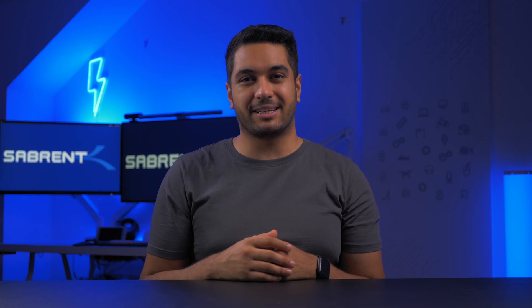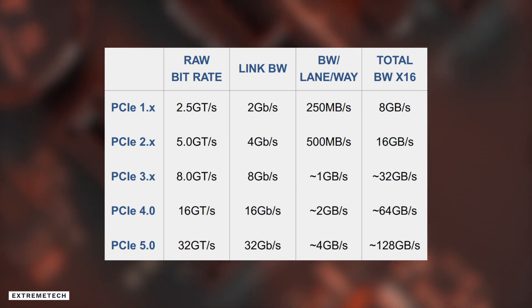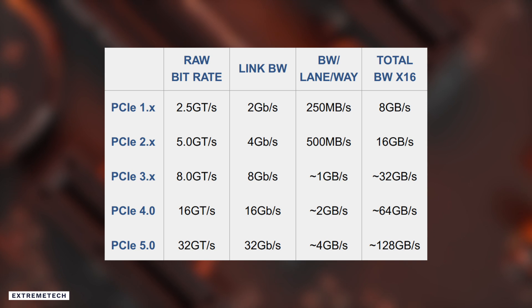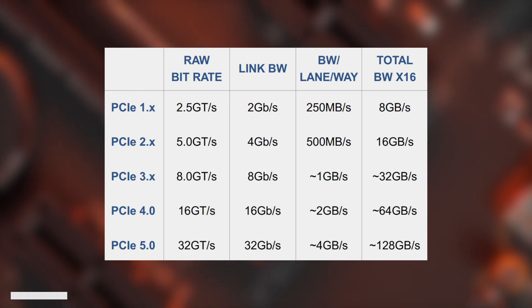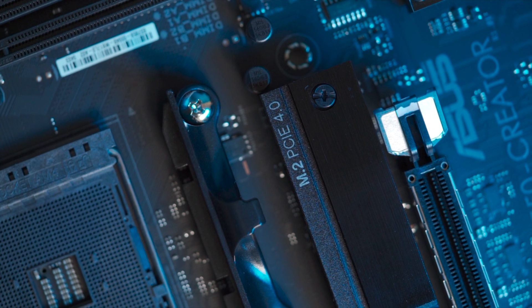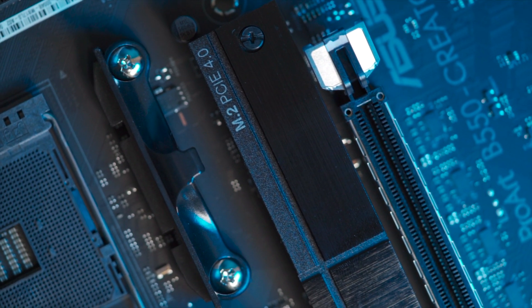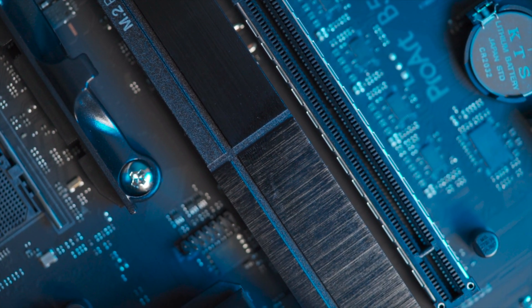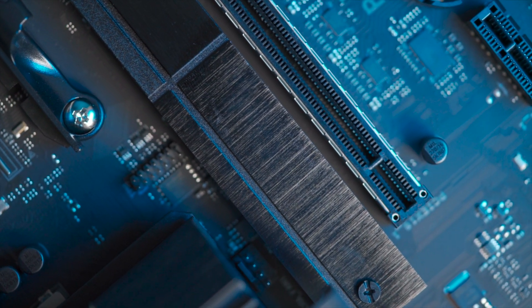PCIe 5.0, as the name suggests, is the fifth generation of PCIe. It will bring an unprecedented 128 gigabytes per second throughput from a full duplex bandwidth of an X16 interface. The specification is actually backwards compatible with previous PCIe generations, but your PCIe card will run at the lowest generation possible — meaning that if your motherboard supports PCIe 5.0 but your card only supports 4.0, you will only get 4.0 performance. We can expect the next generation NVIDIA and AMD GPUs to support 5.0, but there's no official confirmation on that.